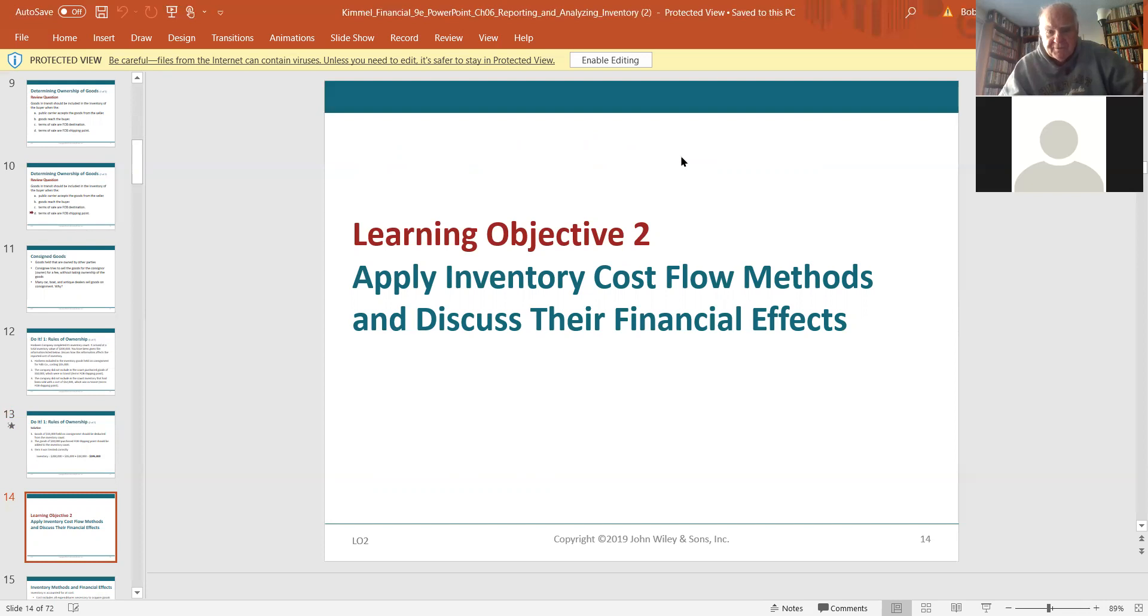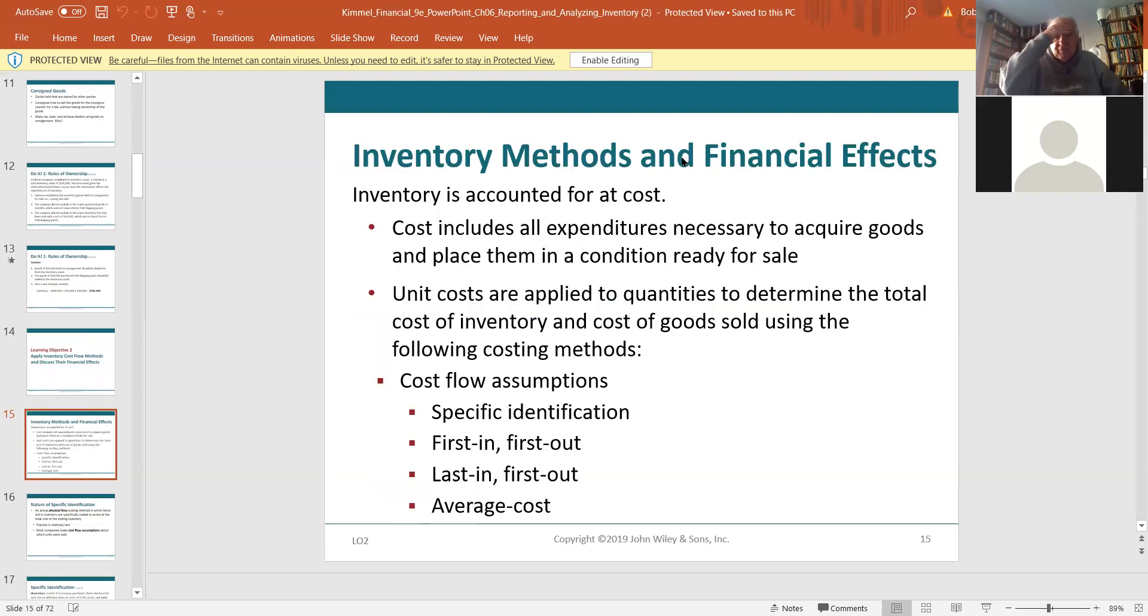Cost flow methods. I think you'll like this Libra, cost flow methods. Inventory is accounted for at cost. Everything is at cost on our balance sheet, right? We know that. Costs include all expenditures necessary to acquire goods and place them in a condition for sale. And then we come up with unit costs. We're going to come up with four methods. Specific ID, first in, first out, known as FIFO, last in, first out, known as LIFO, and average cost.